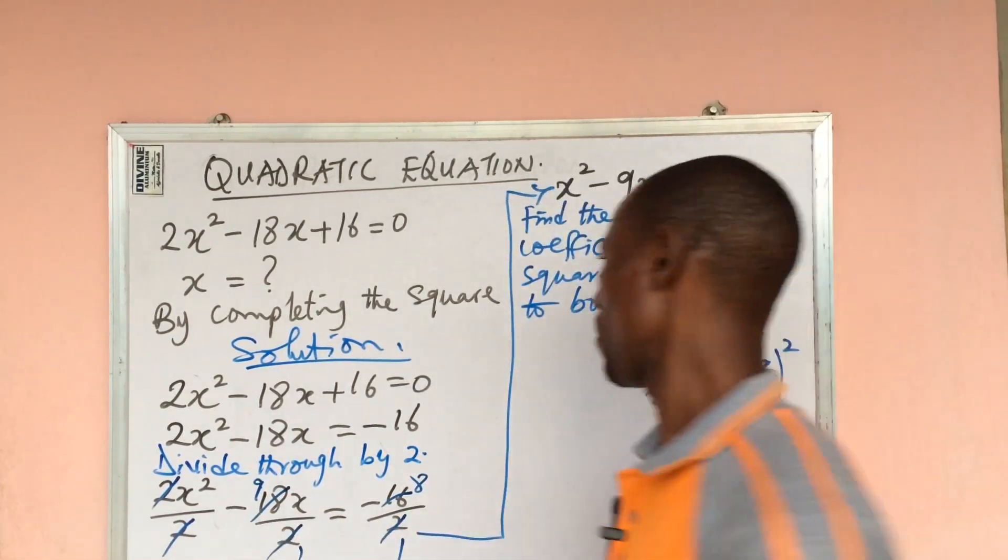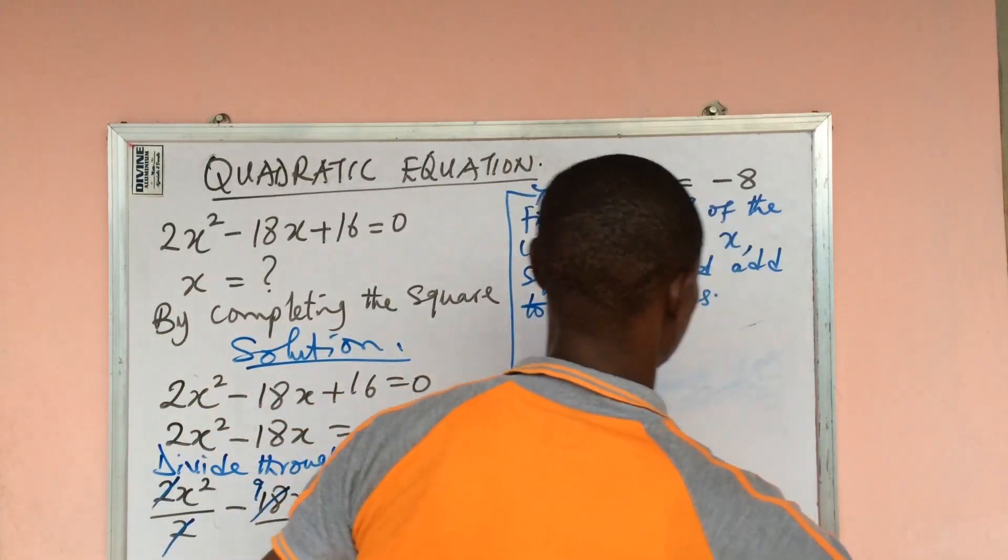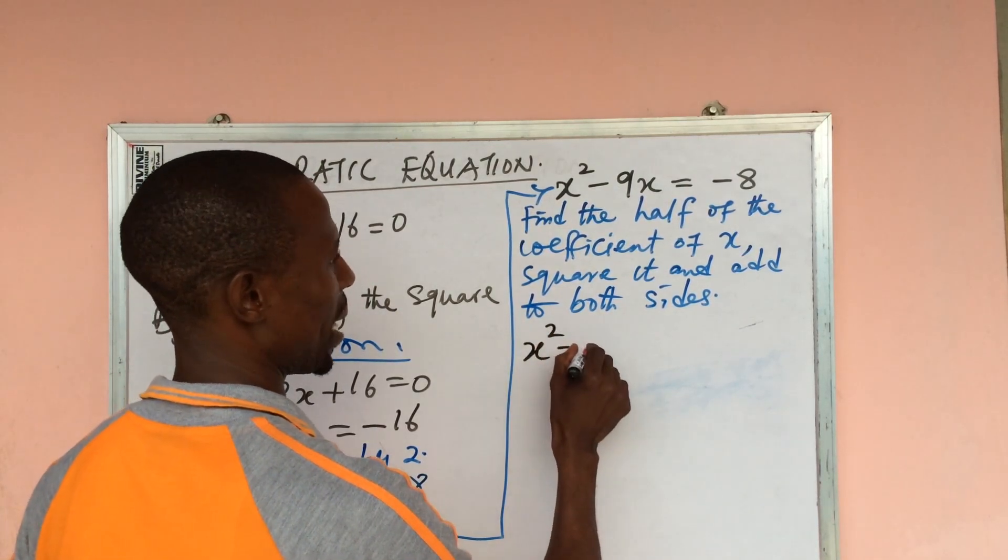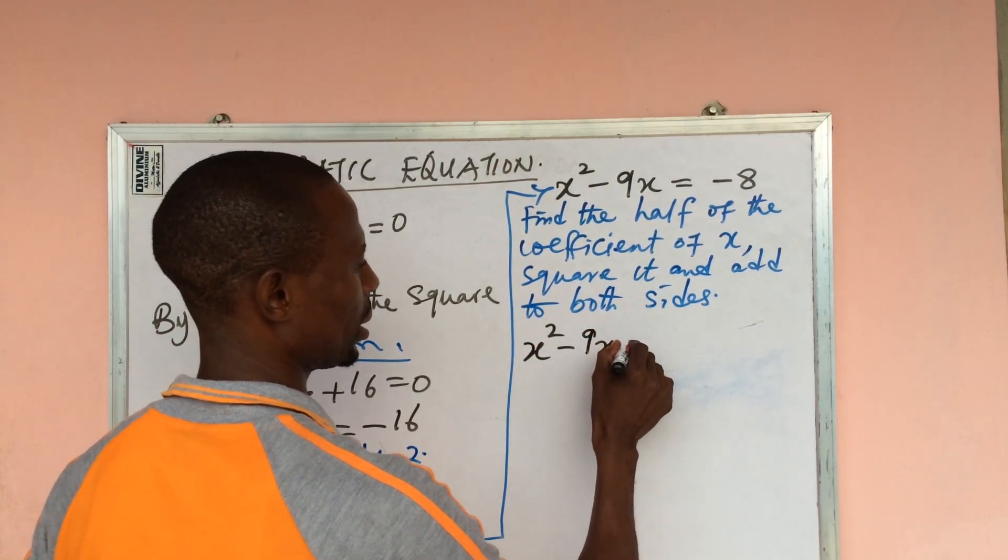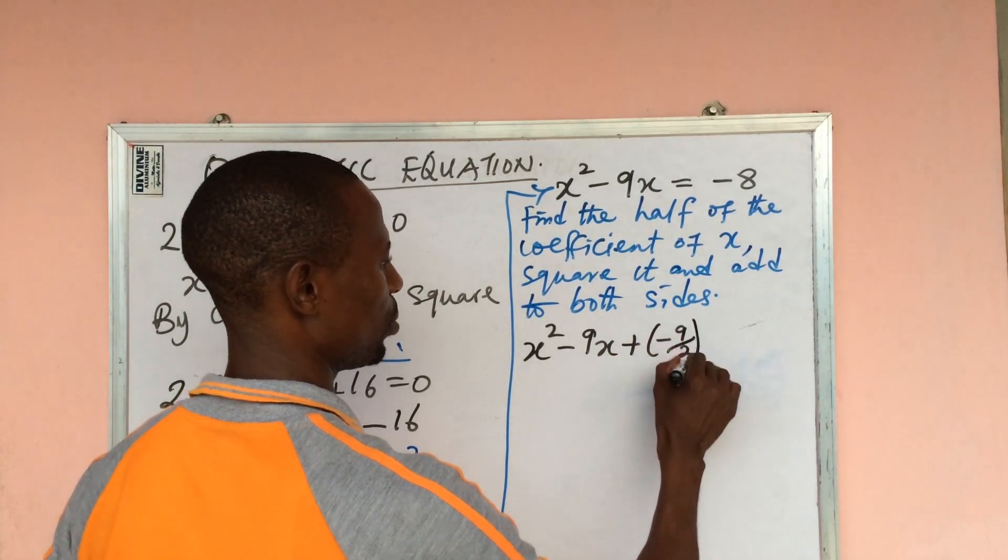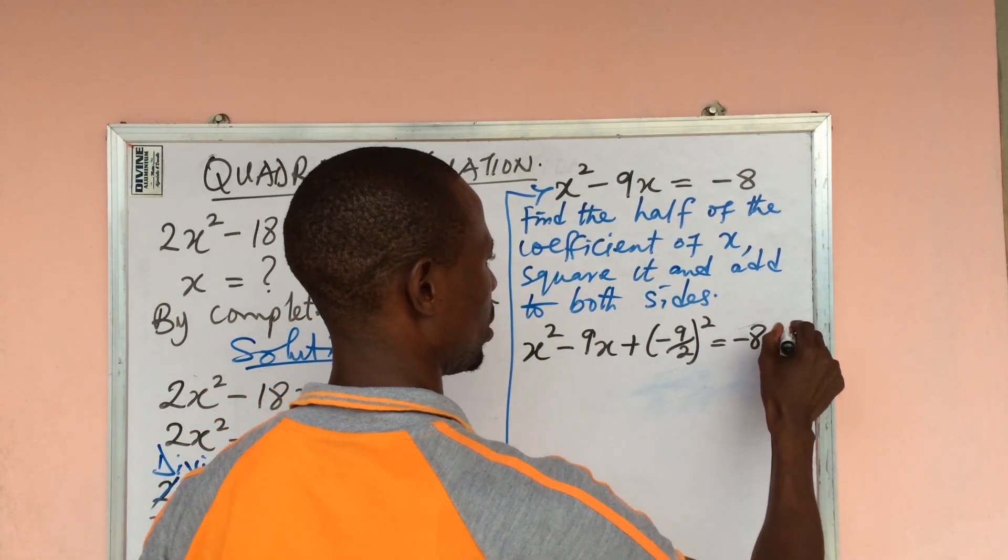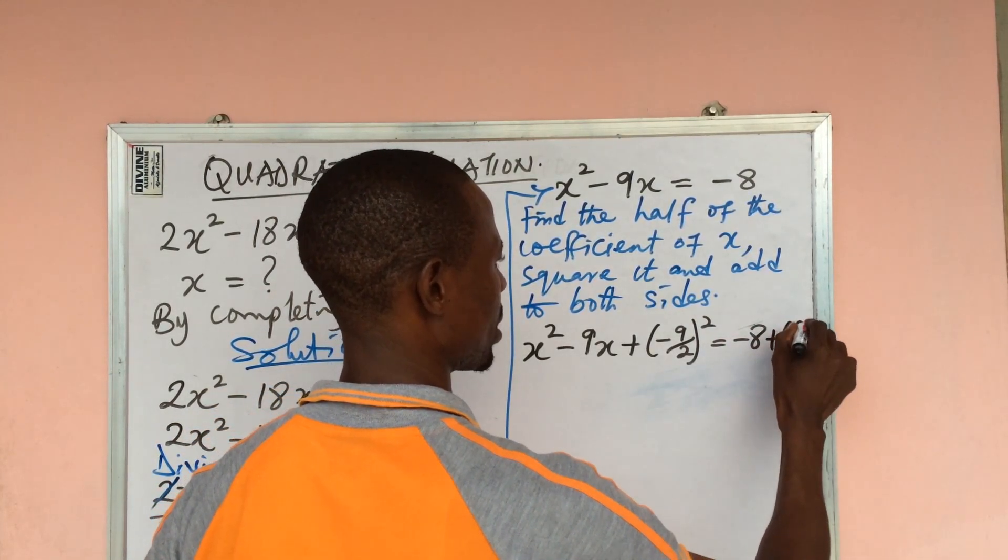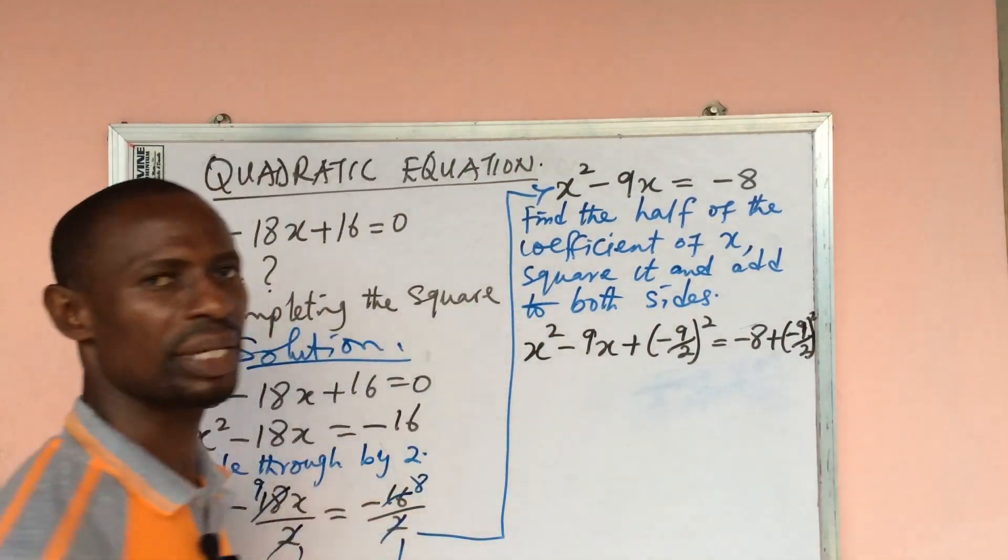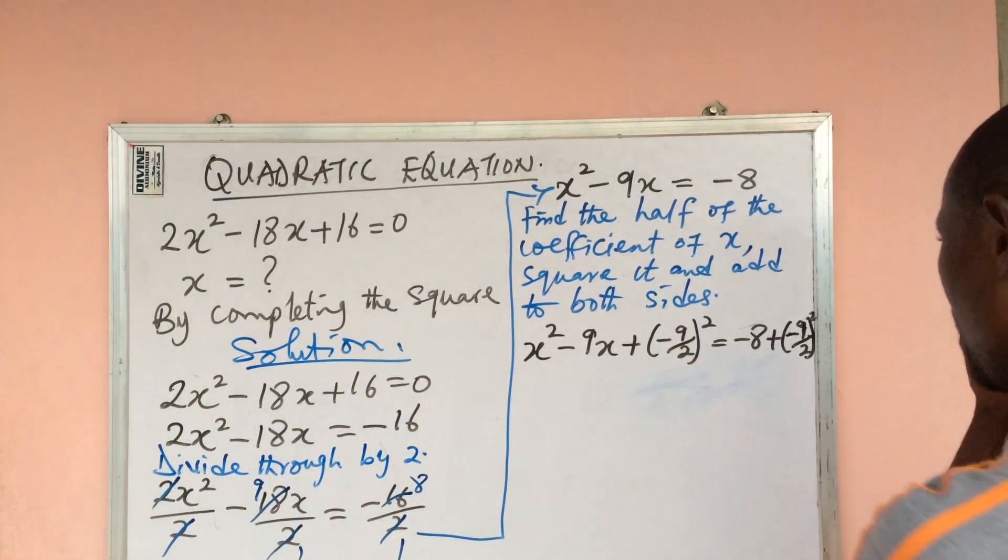So from here this will give us x² - 9x + (-9/2)² = -8 + (-9/2)². Sorry, I'm using a mini board.